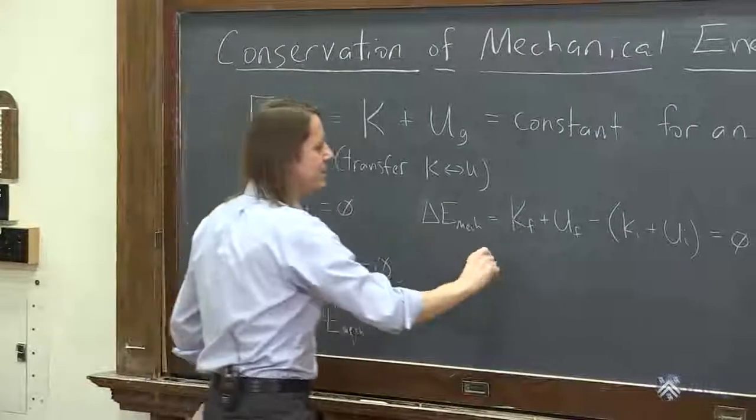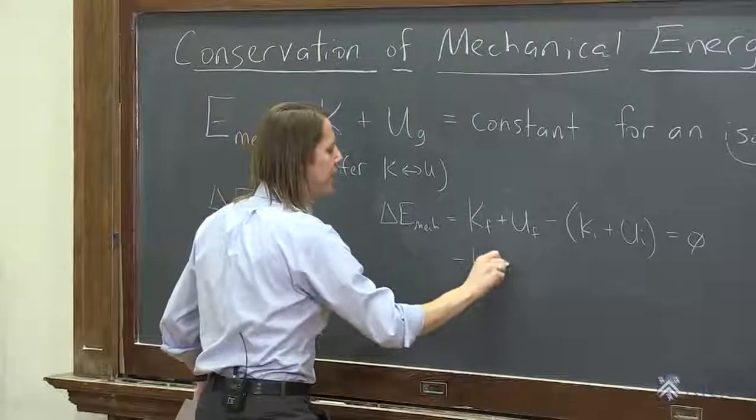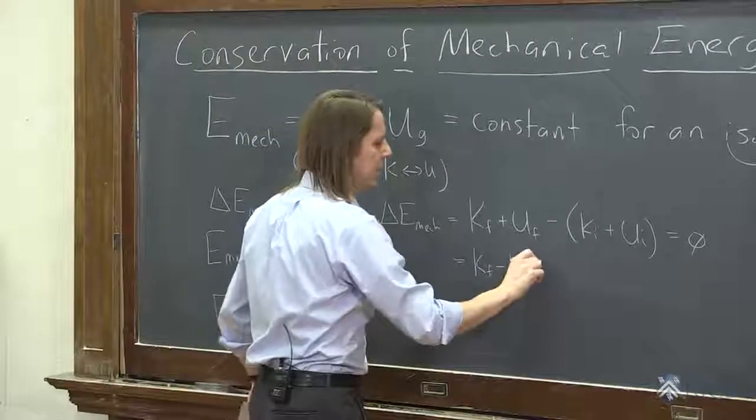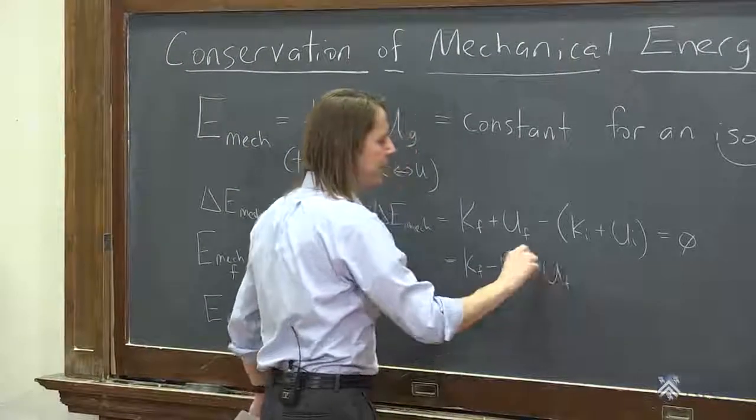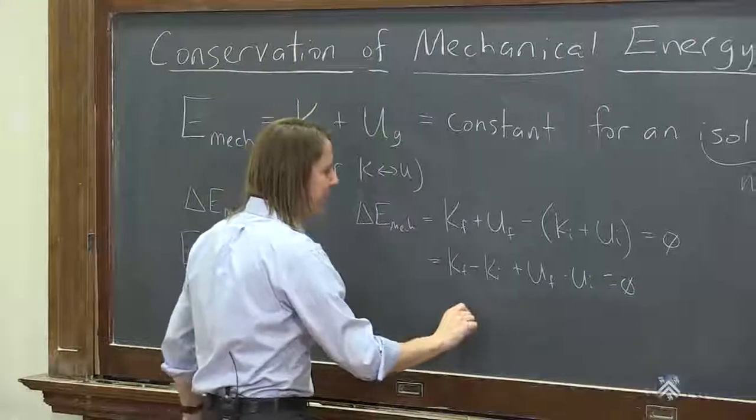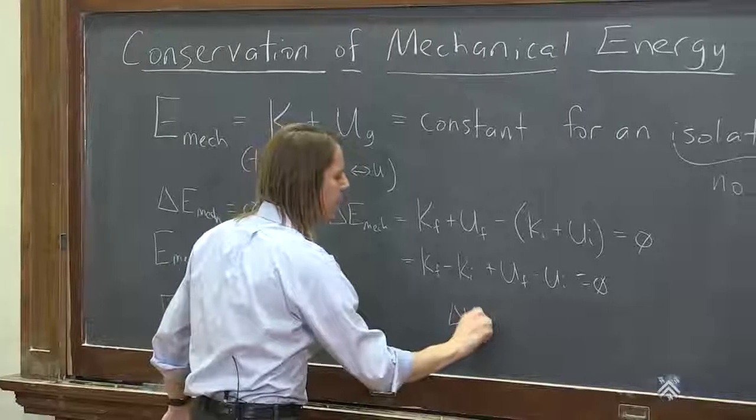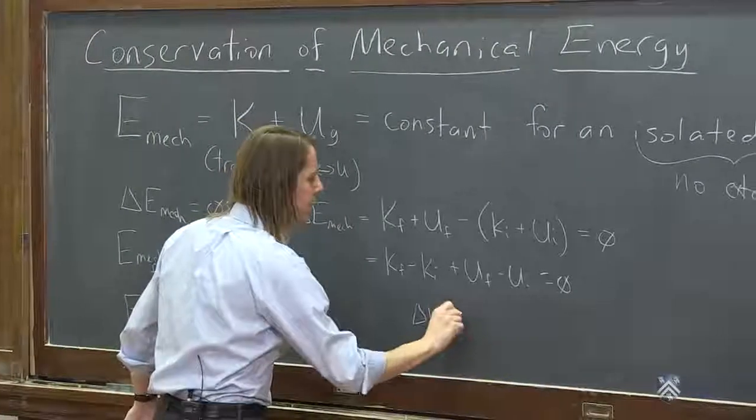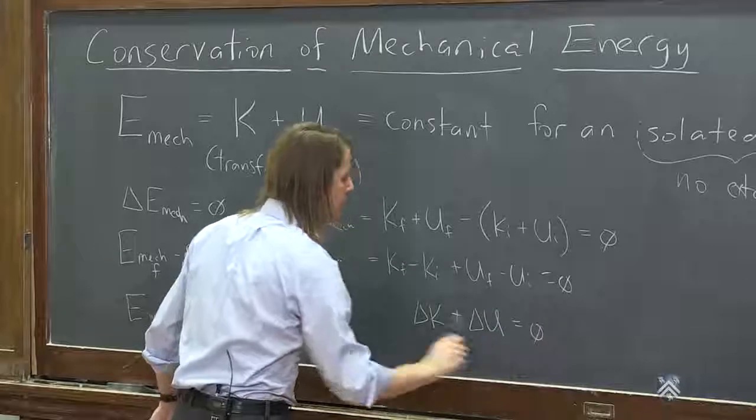Well, then if you rearrange this a little bit, you see that it's equal to the final kinetic minus the initial kinetic, plus the final potential minus the initial potential, equals zero, which means that the delta K plus delta U equals zero.